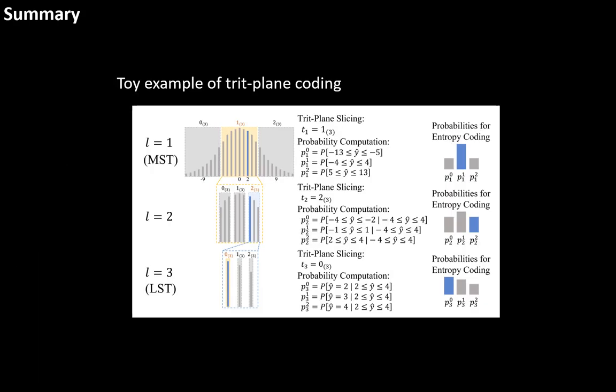Here is the total example of triplet coding. To sum up, the quantized and zero-shifted latent Y hat is sliced to several triets, which is 0, 1, and 2. And we encode these triets with the probability mass functions.